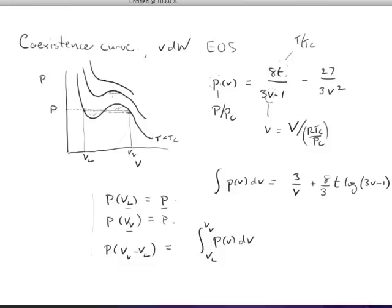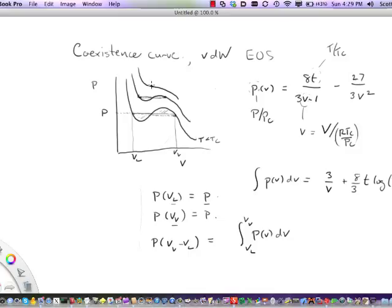And so, maybe the coexistence here looks, you know, the coexistence pressure looks like that, and then up here you finally get to the critical pressure, and then the locus of these molar volumes as a function of temperature gives you the coexistence curve, which maybe looks like this.